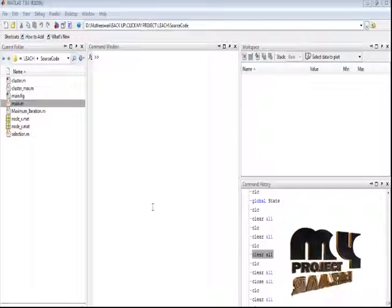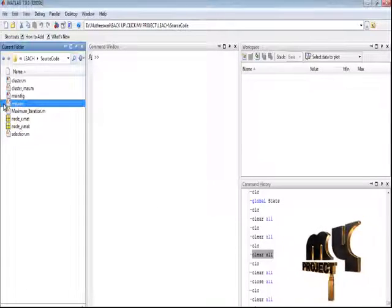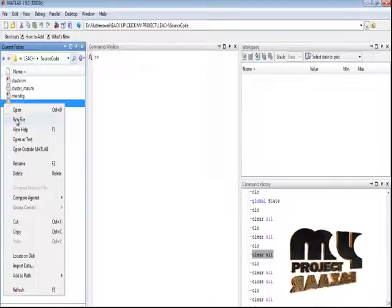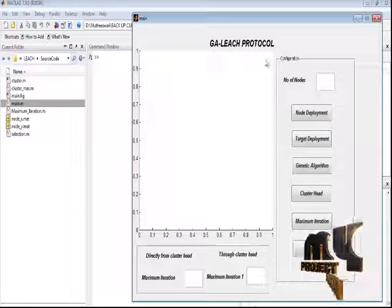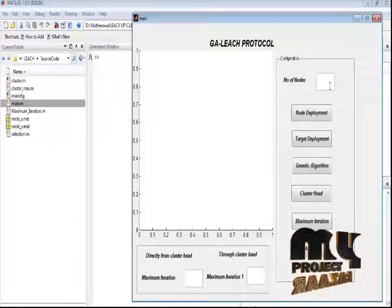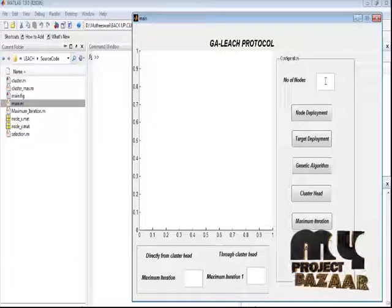Let's discuss the running procedure for our process. Select the main.m file in the current folder, right-click the file and run for exhibiting responses. This is the main window of the LEACH protocol. Here we need to enter the number of nodes we deployed.